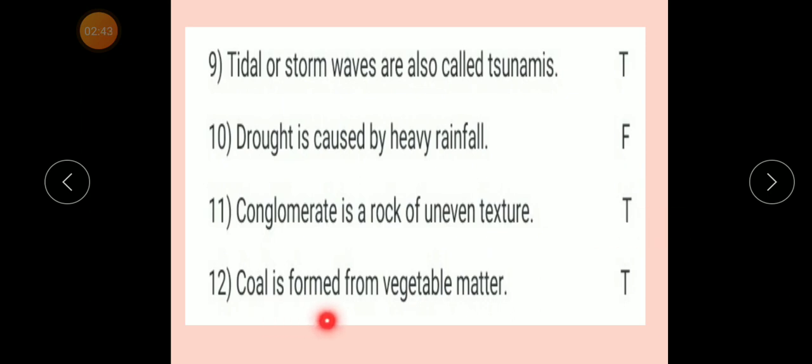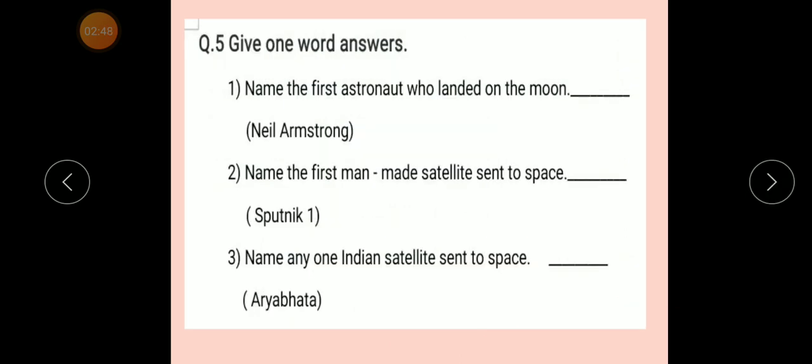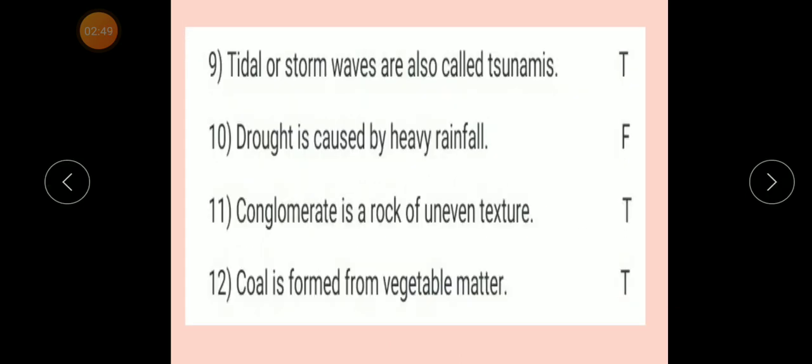Number eleven: Conglomerate is a rock of inadvertent texture. Answer: True. Number twelve: Coal is formed from vegetable matter. Answer: True. Done.